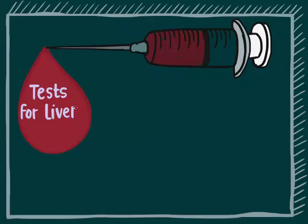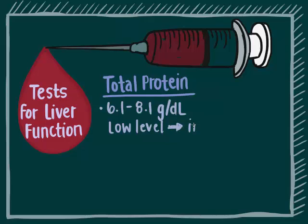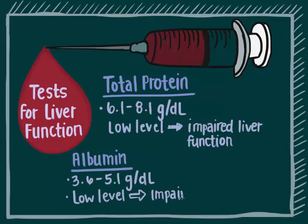Tests for liver function include measuring the levels of total protein and albumin. Total protein has a normal range of 6.1 to 8.1 grams per deciliter; low levels may indicate impaired liver function. Albumin has a normal range of 3.6 to 5.1 grams per deciliter; low levels may also indicate impaired liver function.